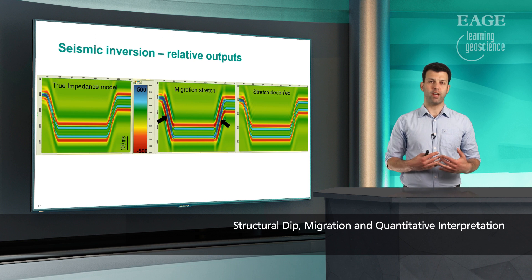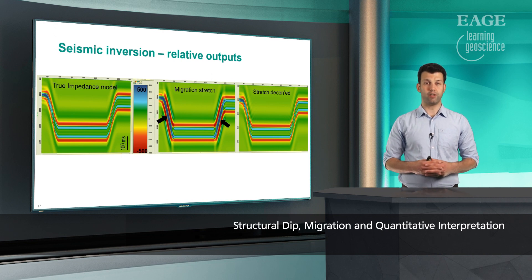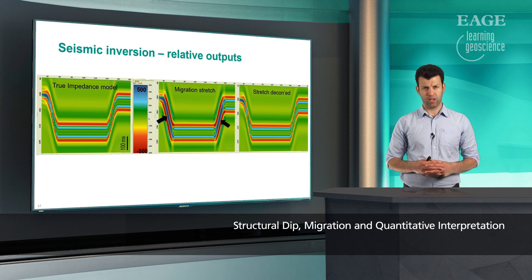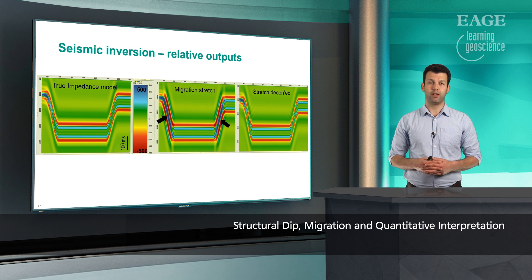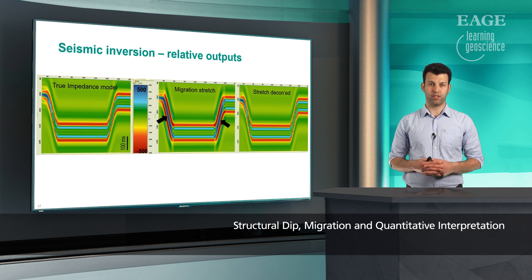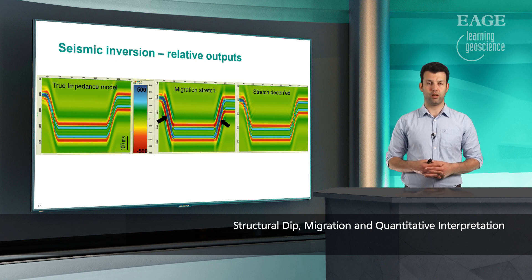Now seismic inversion always has some background model or low frequency models. So if we remove that and look at the relative outputs, that is really only inverting the seismic image itself. All the information are coming from the seismic directly and no background or low frequency model is involved here. Again, this is to show the effect a little bit clearer and you can see that at our dipping events shown with arrows, we have a bias, and after deconvolution that bias is removed and is comparable to the true model on the left-hand side.